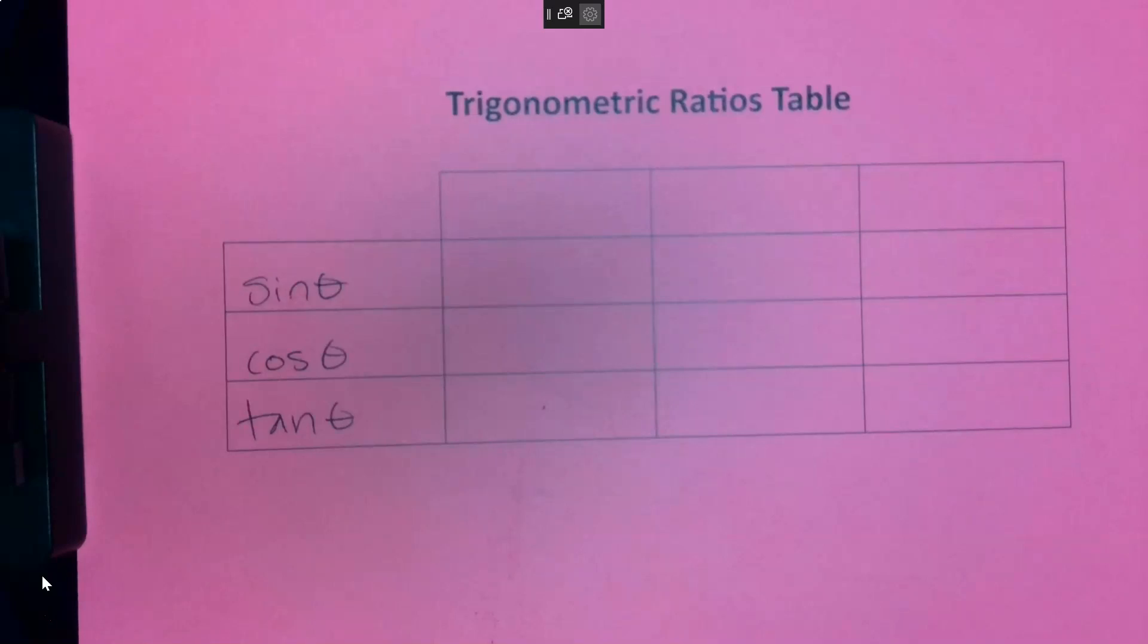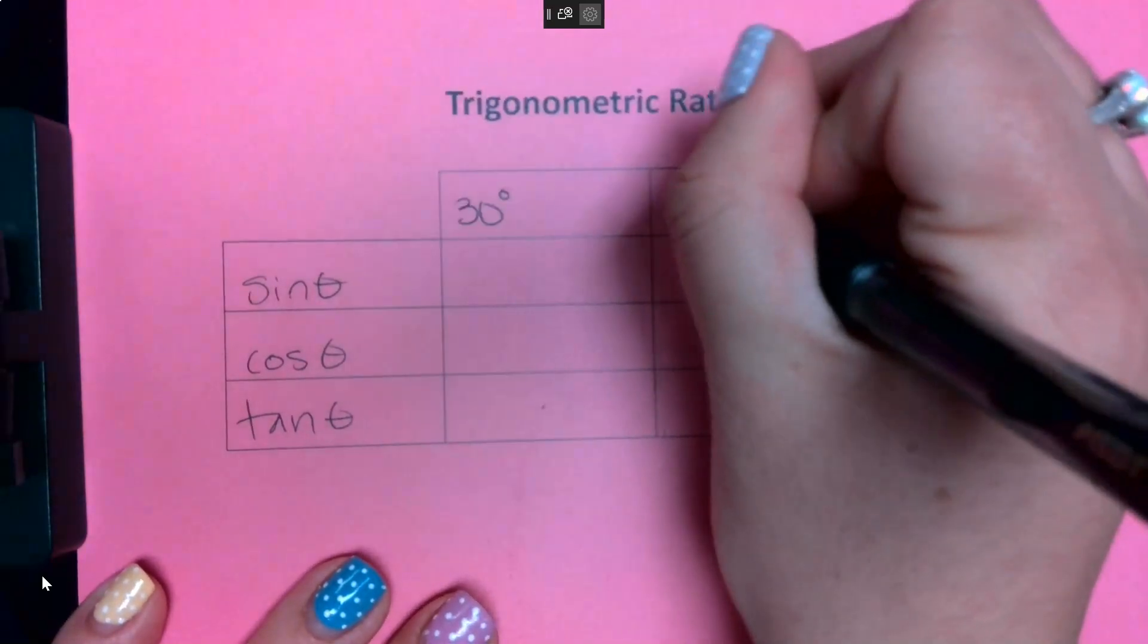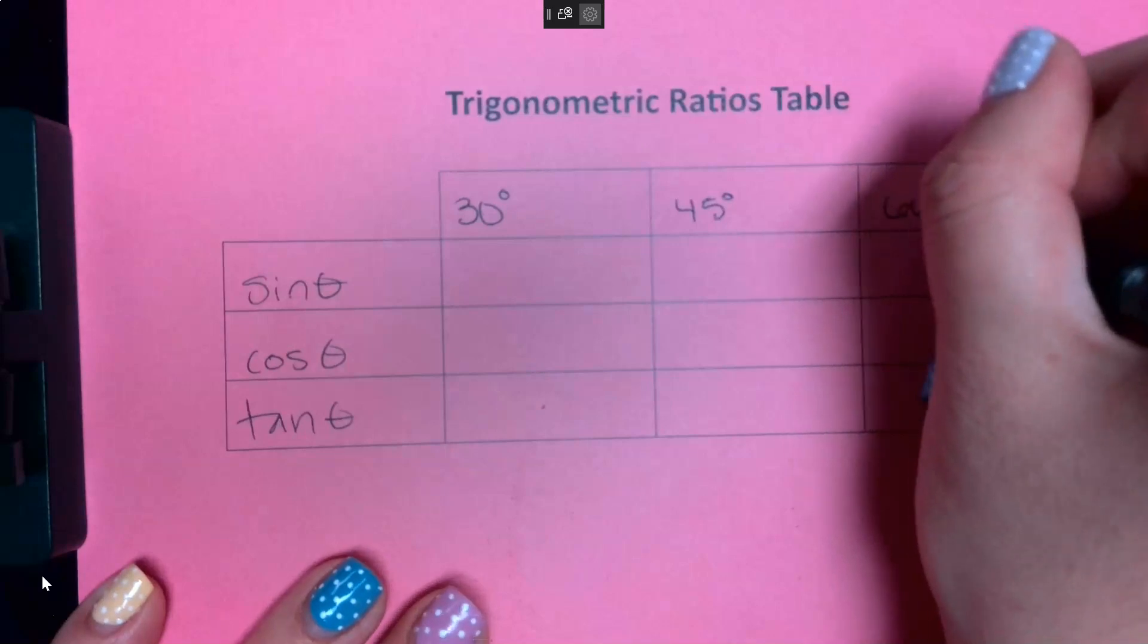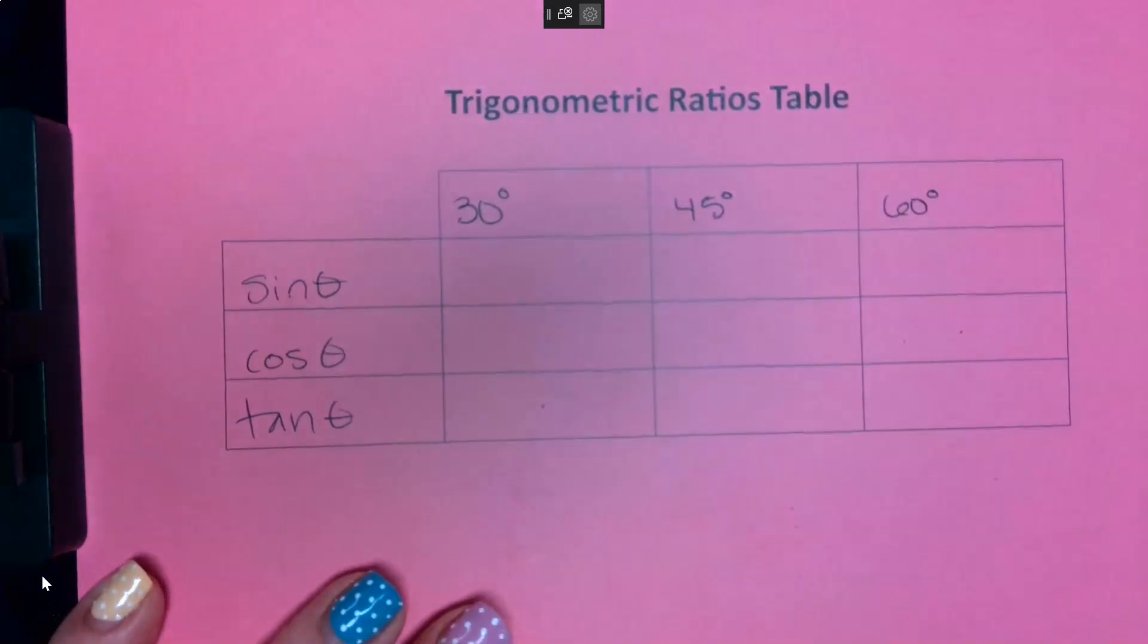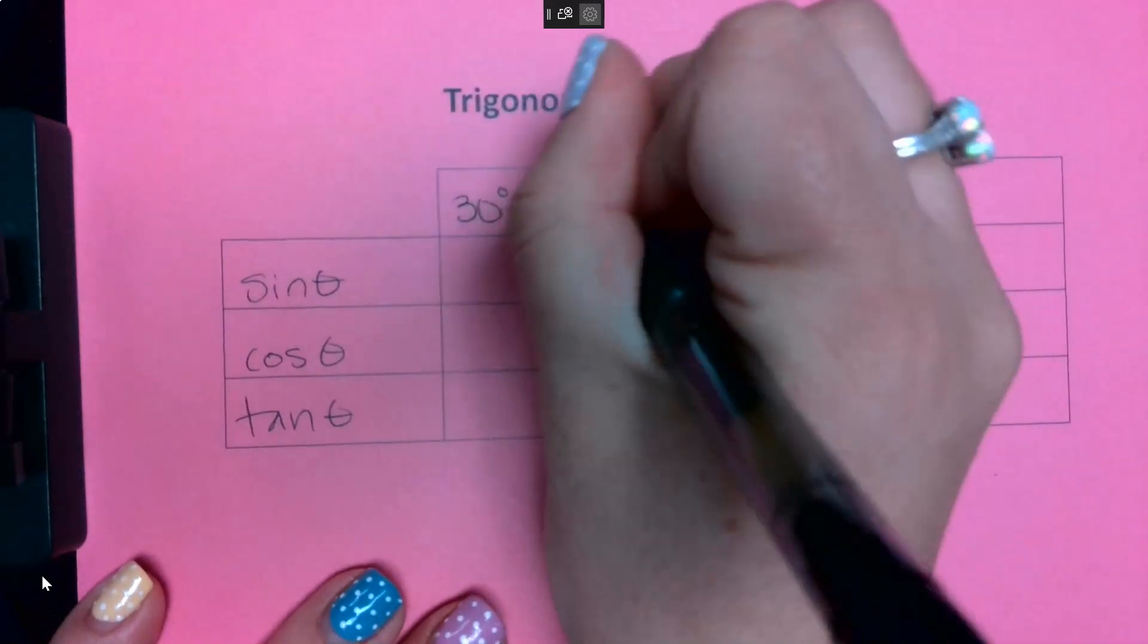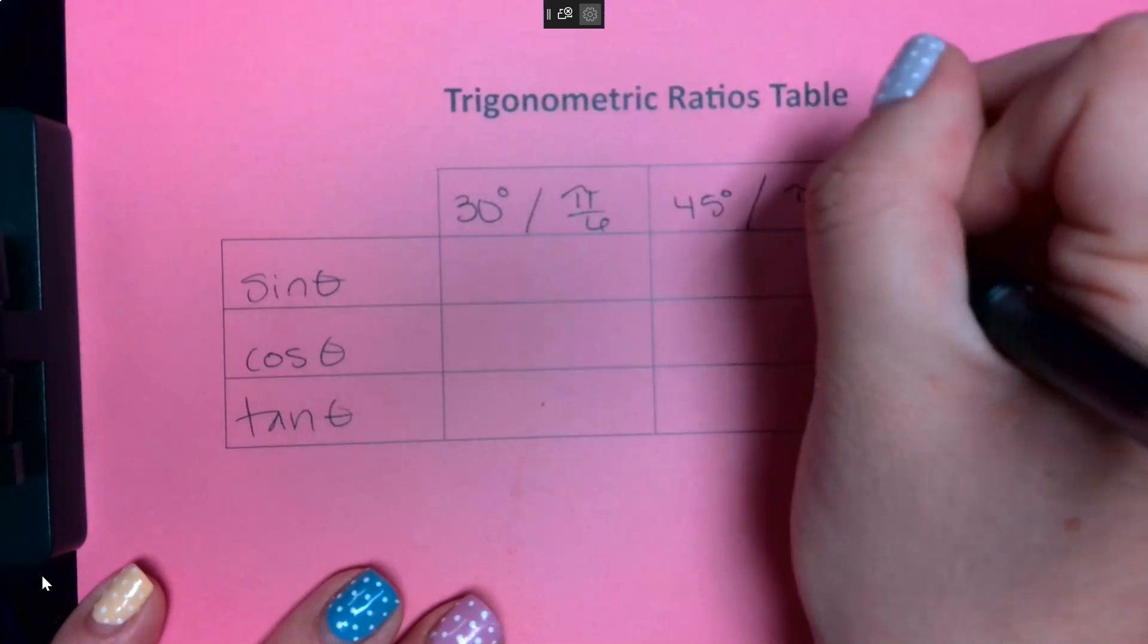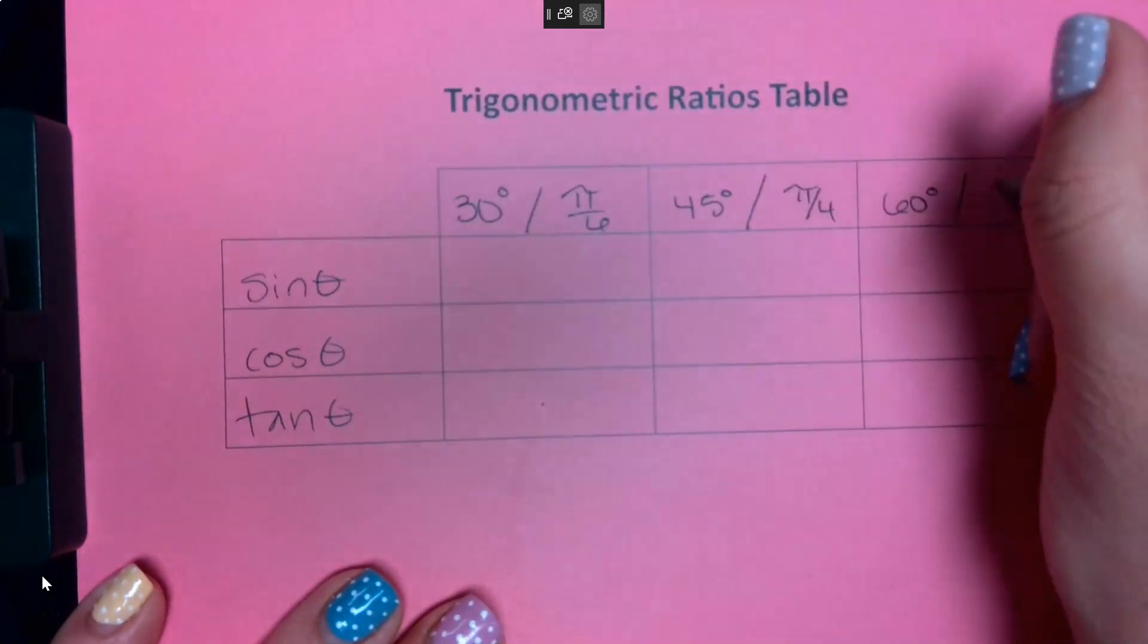Then my angles that are on this table are 30, 45, 60. And I'm also going to write what these are as radians. So 30 degrees is pi sixth radians, 45 is pi fourths, and 60 is pi thirds.